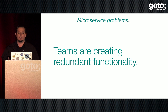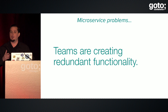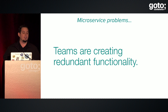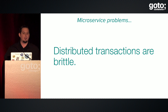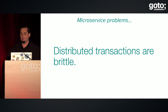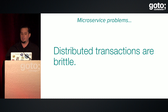Teams end up creating redundant functionality. If 15 different teams each create their own authentication provider, you have snowflake implementations across all your microservices with nobody knowing what's duplicated. Distributed transactions are also brittle — teams create transactions spanning multiple services using brittle HTTP, and data gets into inconsistent states. Then customer support is asking DBAs to manually fix fields in the database, but all the DBAs left. Microservices introduce a bunch more problems.